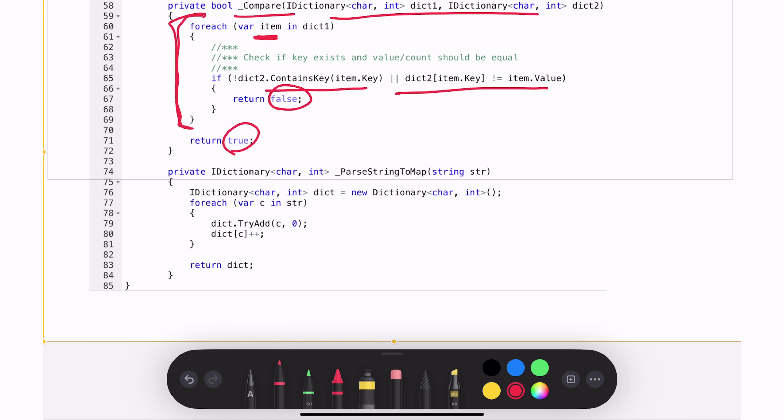The other helper method that I have is this parse string to map which accepts string, iterates through all of these characters in the string and adds it to this dictionary variable. If the character already exists, it will increment the count.